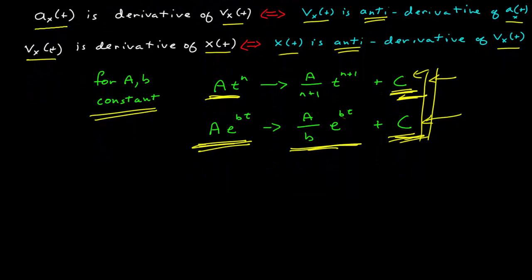Let's start with some acceleration as a function of time, some simple polynomial. We'll call it 2 plus 3 times the time t. If I want to find the anti-derivative of that, I just use this formula. So the velocity along the x-axis as a function of time is equal to 2t plus 3 halves t squared, plus this additive constant.